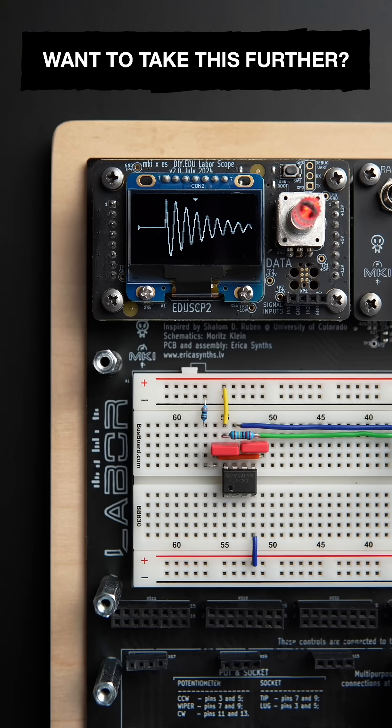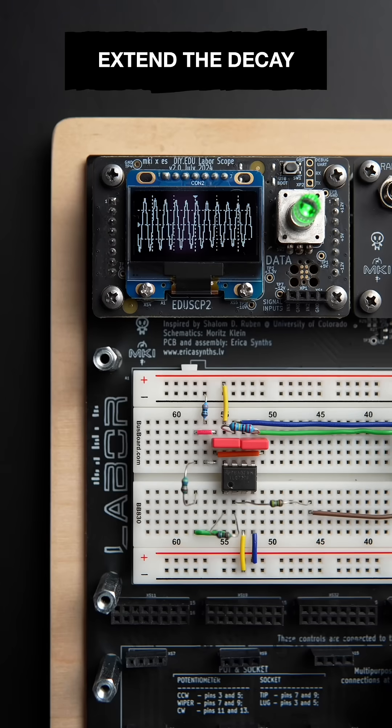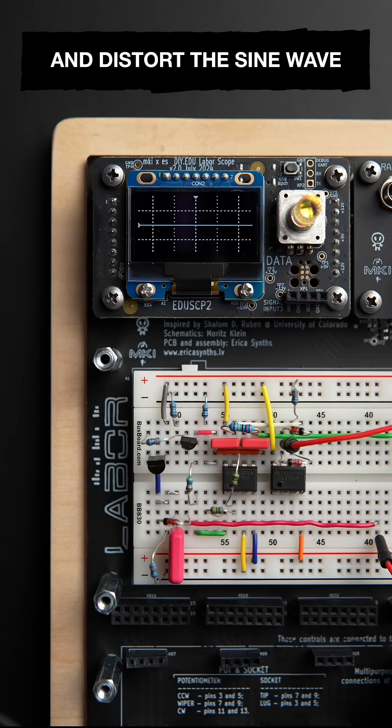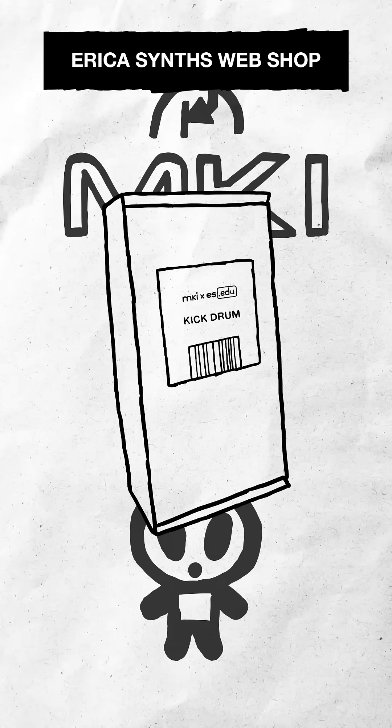Want to take this further? Our DIY kick drum kit builds on this exact circuit and shows you how to extend the decay, add a pitch envelope and distort the sine wave for extra grit. You can find it in the Erika Sins webshop.